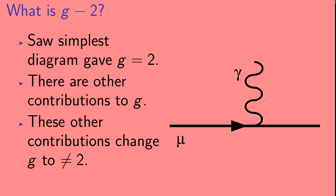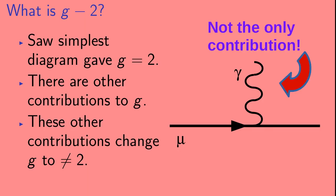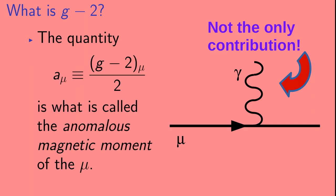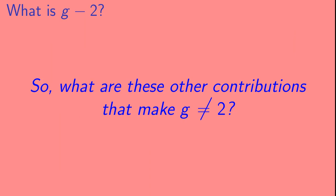So now let's get back to the Feynman diagrams. We saw that the simplest diagram gave G equal to 2. But there are other contributions to G. These other contributions change G to be something not equal to 2. So, when we measure G minus 2, we are measuring the size of these other contributions. And the quantity A mu, which is just G minus 2 of the muon divided by 2, is what is called the anomalous magnetic moment of the muon.